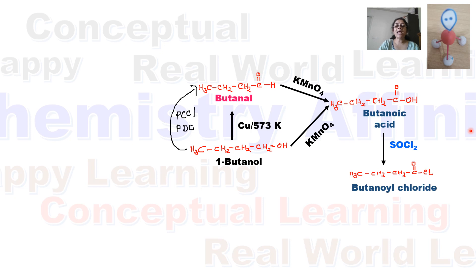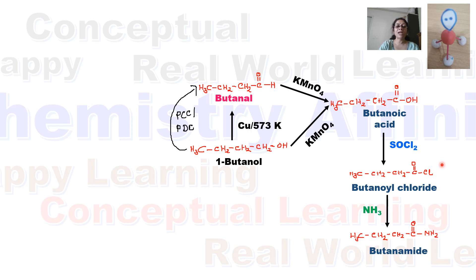Butanoic acid converts to butanoyl chloride when treated with thionyl chloride. Butanoyl chloride then converts to butanamide when treated with ammonia.